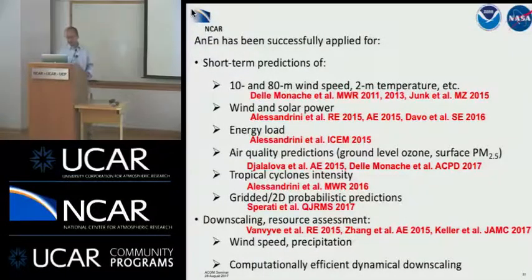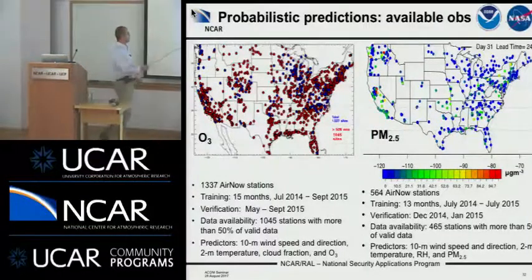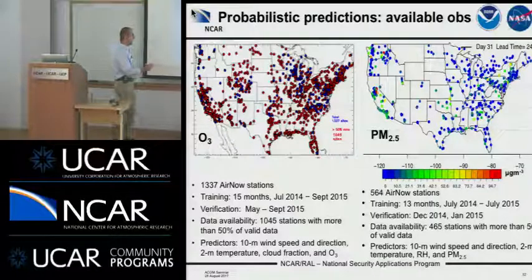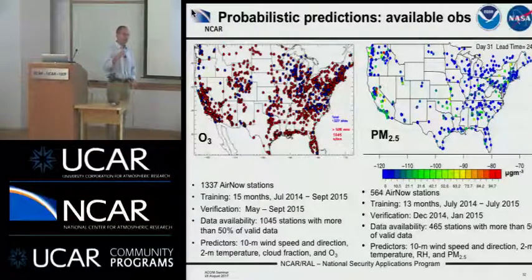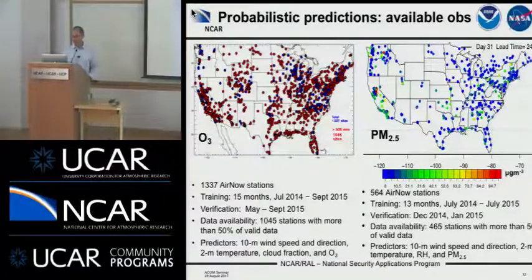For the application of the analog ensemble to air quality prediction, here is the data we use for testing for NASA. Those are the stations for ozone on the left, the stations for PM2.5 on the right, and we have 15 months of training for ozone and 13 months for PM2.5. You can also see the different predictors we use to predict ozone or PM2.5. In our multivariate matching metric we can assign weights to the different predictors, and we've developed an automatic algorithm to determine the optimal weights for each predictor.